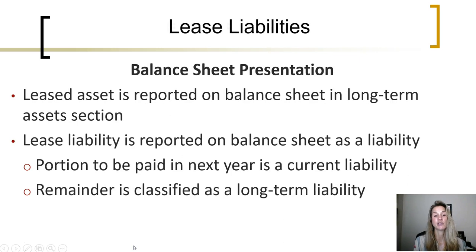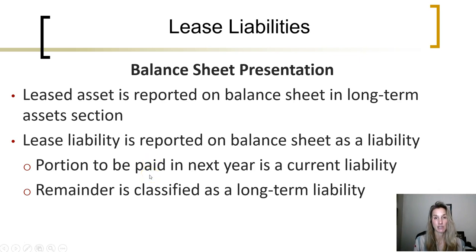On the balance sheet, the asset is reported as an asset along with other assets, and the liability is reported on the balance sheet as a liability. Any amount of the lease that is paid within the next year is recorded as current, and any remainder of that liability is reported as long-term.